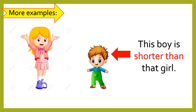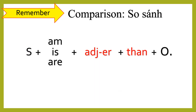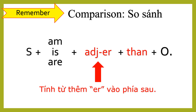This boy is shorter than that girl. We use "is" or "are", and then we use short adjectives with "-er" and "than". The last part is the object.